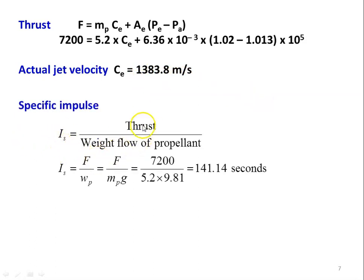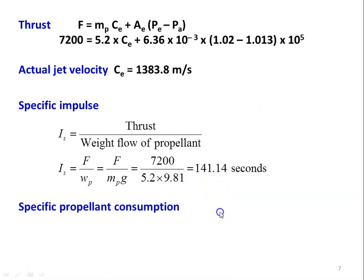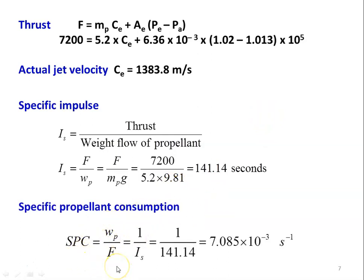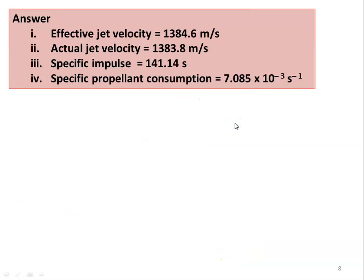Specific impulse Is = F / (MP × g) = 7200 / (5.2 × 9.81) = 141.14 seconds. Specific propellant consumption Sp = 1 / Is = 1 / 141.14 = 7.085 × 10⁻³ s⁻¹. Summary: effective jet velocity 1384.6 m/s, actual jet velocity 1383.8 m/s, specific impulse 141.14 s, specific propellant consumption 7.085 × 10⁻³ s⁻¹.